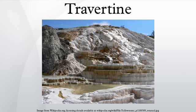In limestone caves, travertine can form stalactites, stalagmites, and other speleothems. It is frequently used in Italy and elsewhere as a building material. Travertine is a terrestrial sedimentary rock, formed by the precipitation of carbonate minerals from solution in ground and surface waters, and/or geothermally heated hot springs. Similar deposits formed from ambient temperature water are known as tufa.